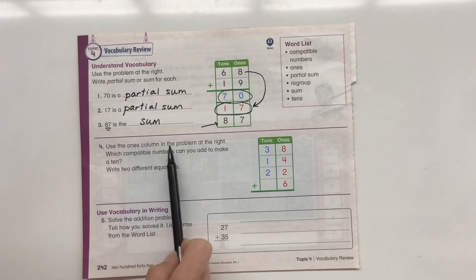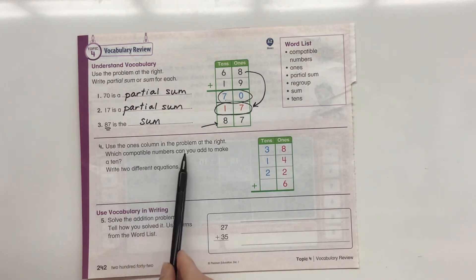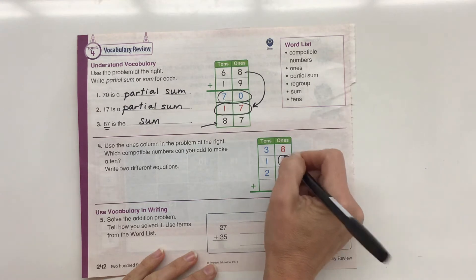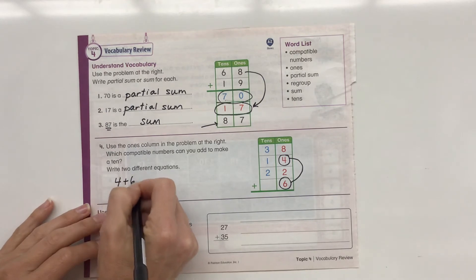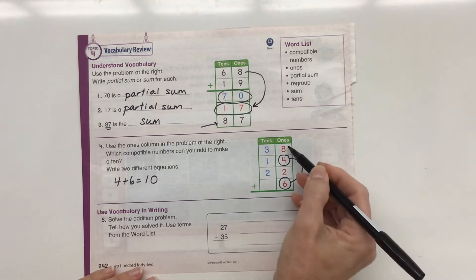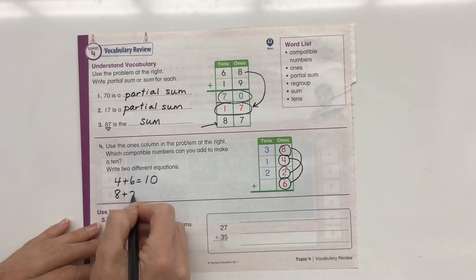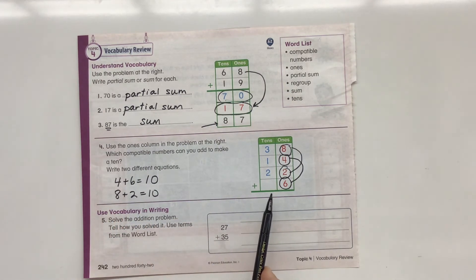Number four. Use the ones column in the problem with the right. The ones column is all written in red. Which compatible numbers can you add to make a 10? And write two different equations. So let's see. To make a 10, I can do, oh, look at this. Right here. Those are two compatible numbers. Four plus six equals 10. And take a look at this. Eight plus two also equals 10. Eight plus two equals 10. Now, does it tell us to solve the equation? Nope. It's just having us look for ways that we can make 10. Numbers that are compatible, we can put together into groups of 10.